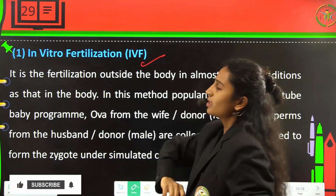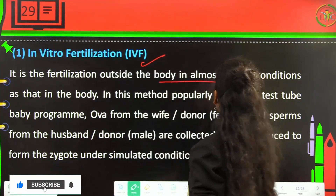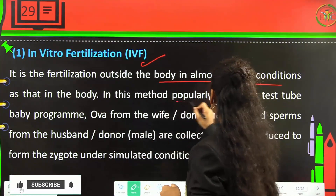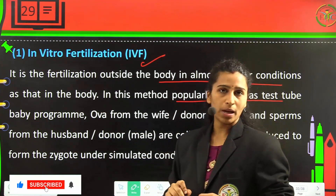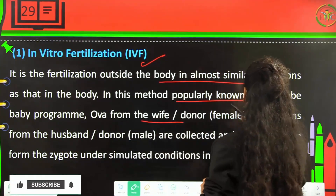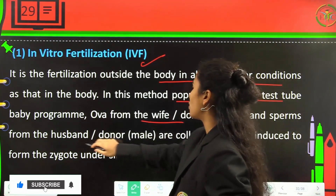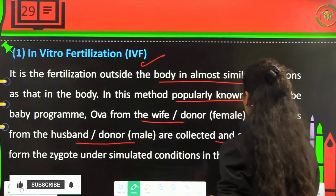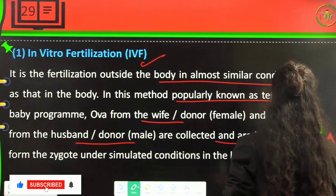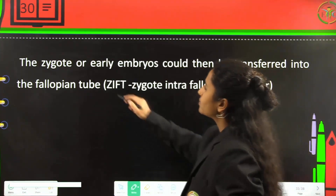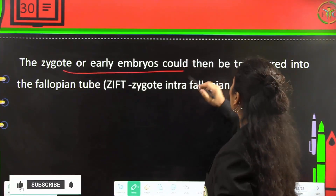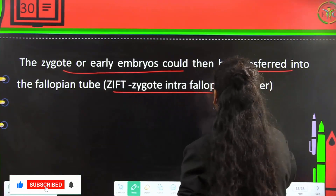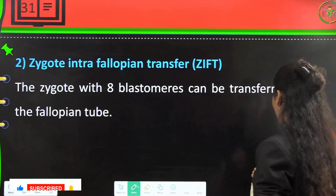IVF — in vitro fertilization — is fertilization outside the body under conditions similar to those in the body. It is popularly known as the test tube baby program. Ova from the wife or a donor and sperms from the husband or a donor are collected and induced to form a zygote under stimulated conditions in a laboratory. The zygote or early embryo is then transferred into the fallopian tube by ZIFT.